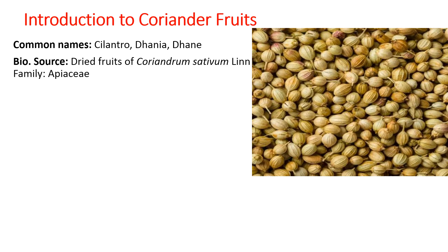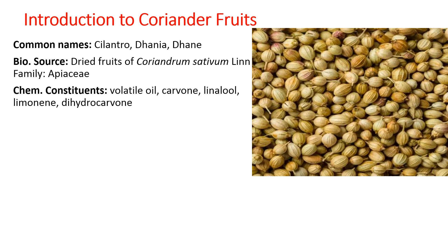The biological source consists of dried fruits of Coriandrum sativum Lin. of the family Apiaceae. The major chemical constituents are carvone, linalool, limonene, and dihydrocarvone — these are the phytoconstituents of the volatile oil present in these fruits.